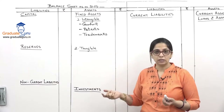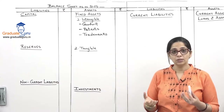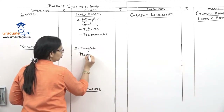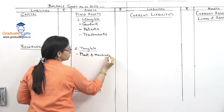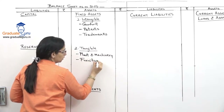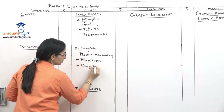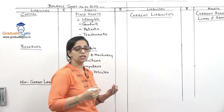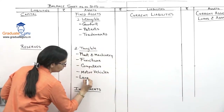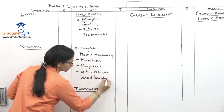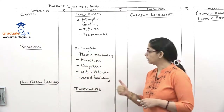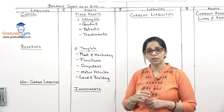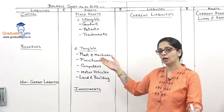Now we come to tangible assets. These are our normal assets which we see, feel, touch, and use for doing our business. Examples include plant and machinery, furniture, computers, motor vehicles, and even land and building — these all come under tangible fixed assets. On all these assets we charge depreciation, because every year the value of these assets decreases. So at a certain percentage we charge depreciation and show the net value after subtracting depreciation.